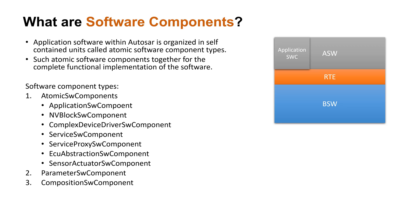The application software component type will be the most predominantly used atomic software component in an application. This component is generic and will hold different functionalities of the software, for example performing calculation, decision making, etc. A real example: if you take a start-stop functionality, an application software component can hold the algorithm to calculate and decide when to stop or start the vehicle automatically. Such functional implementation can be planned in an application software component.